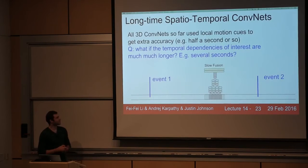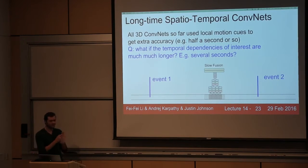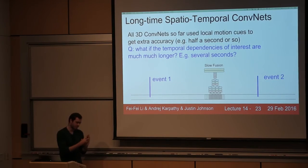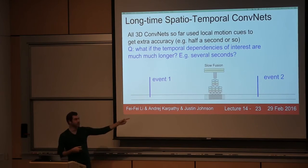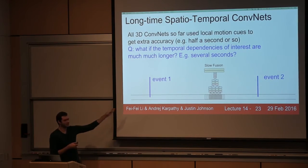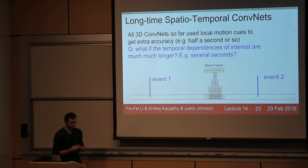So far we've only talked about little local information in time — pieces of about half a second — to improve classification. But what happens if you have videos with much longer temporal dependencies? It's not only that local motion is important, but some events throughout the video are much larger in time scale. Event two happening after event one could be very indicative of some class, and you'd like to model that. What are the kinds of approaches you might think of to model these kinds of much longer-term events?